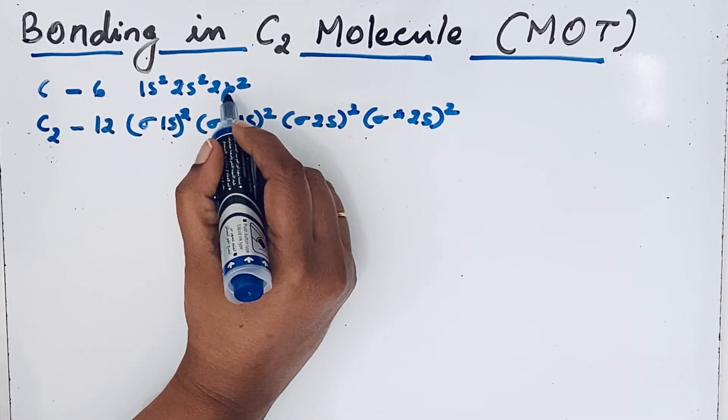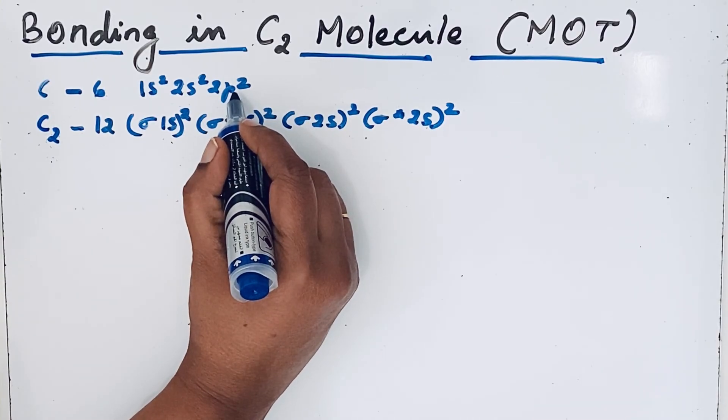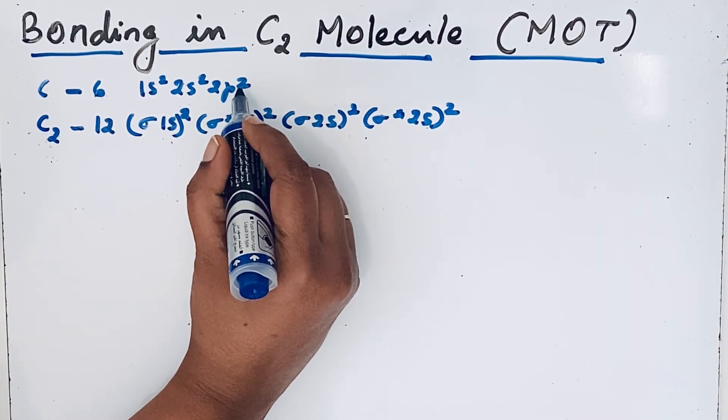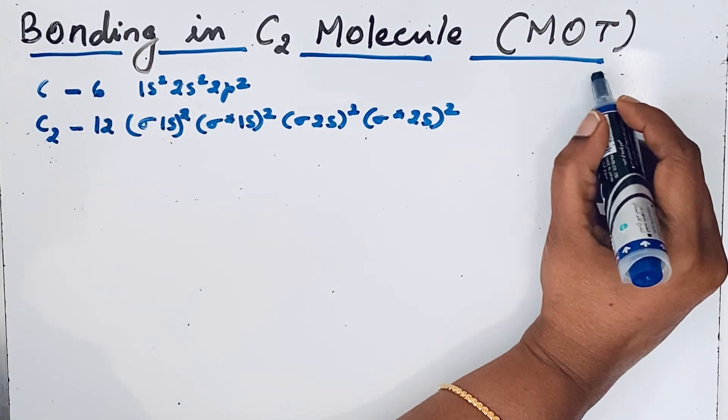For p subshell we have three orbitals. These three atomic orbitals combine into six molecular orbitals. Let us take the internuclear axis.